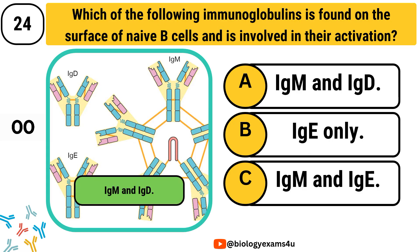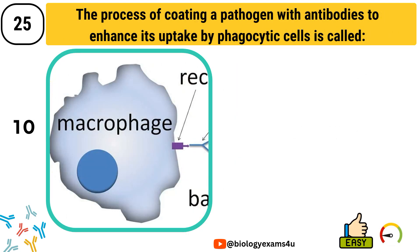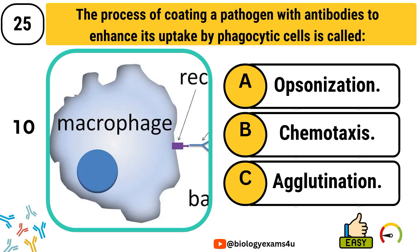Question number 25. The process of coating a pathogen with antibodies to enhance its uptake by phagocytic cells is called: Option A, opsonization. Option B, chemotaxis. Option C, agglutination. The answer is opsonization.